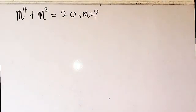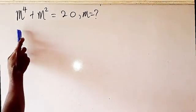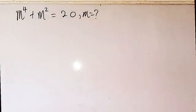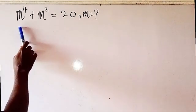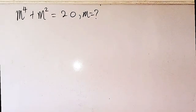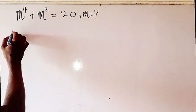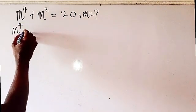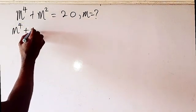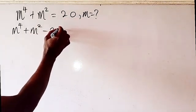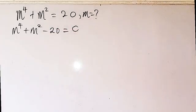We are going to be solving the value of m here: m to the power of 4 plus m to the power of 2 equals 20. We can see the highest power of m is 4, so therefore we are going to have four possible solutions for m. This can be written as m to the power of 4 plus m squared, and transposing to get minus 20 equals 0.